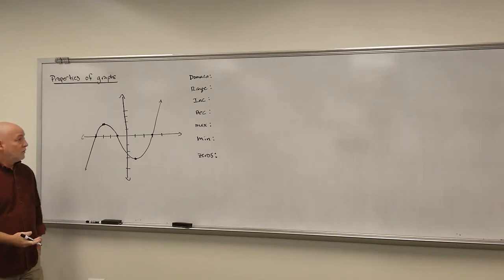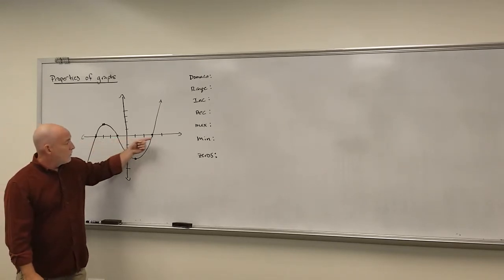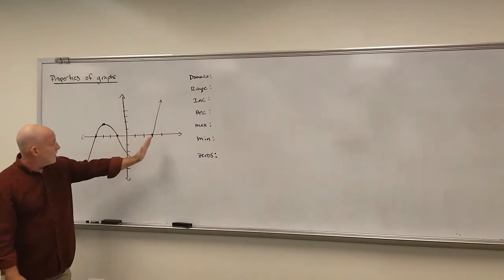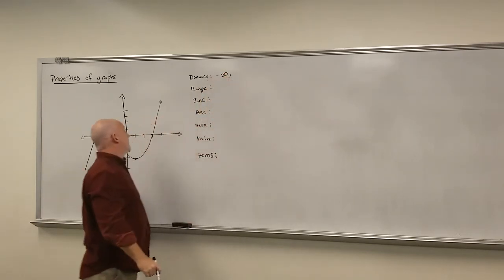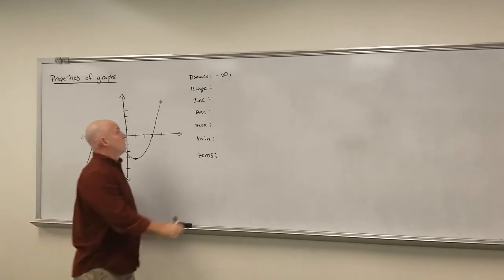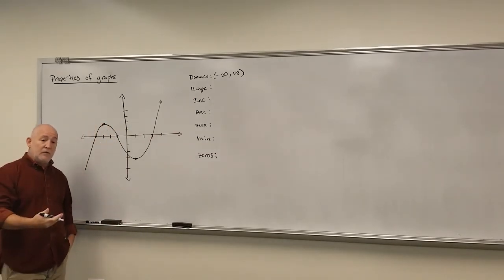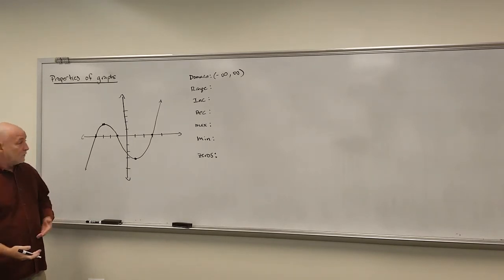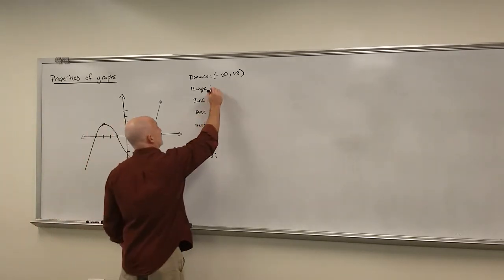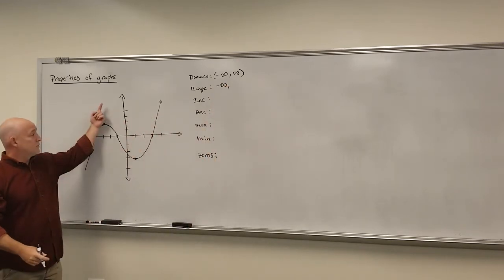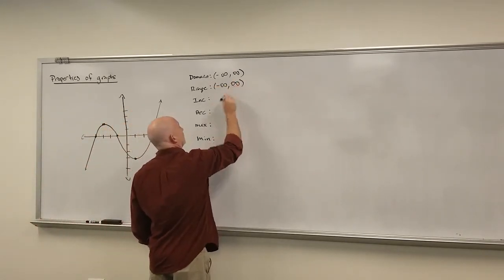Let's start with domain — the x-values this graph covers. How far left and how far right does it go? Since it goes left forever, the domain starts at negative infinity. Since it goes right forever, it goes to positive infinity. We never include infinities, so domain is (−∞, ∞). For range — the only interval about y-values — the graph goes down forever and up forever, so the range is also (−∞, ∞).